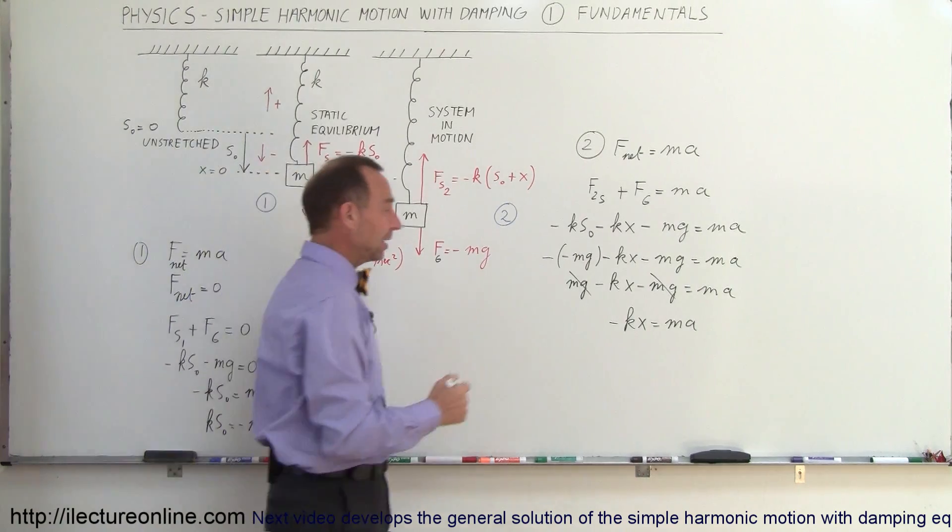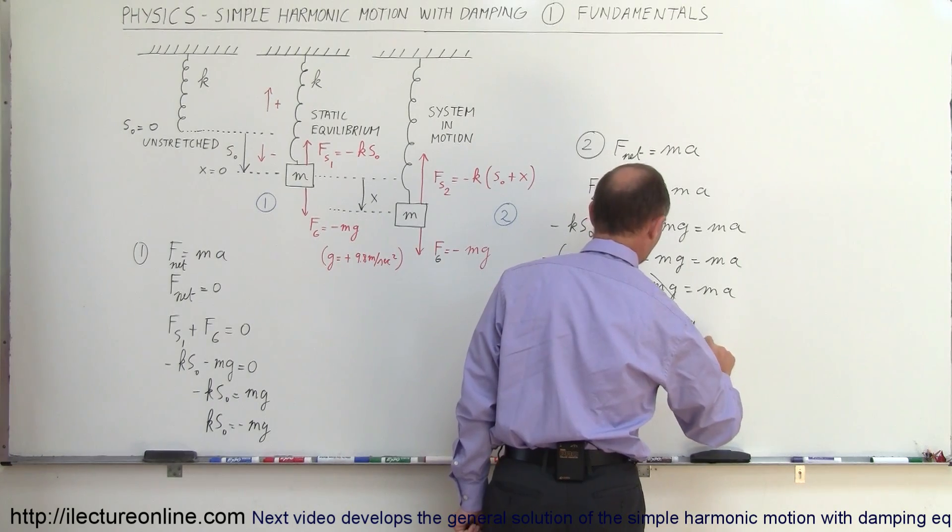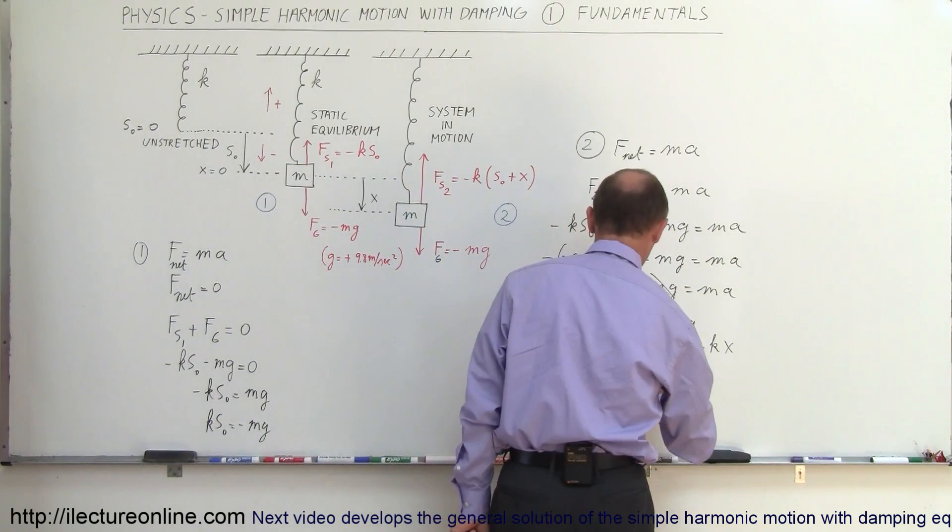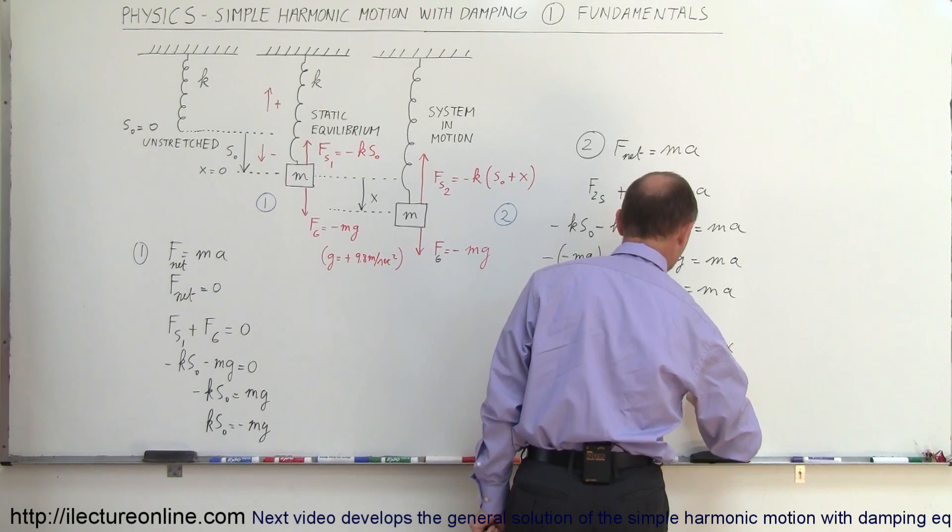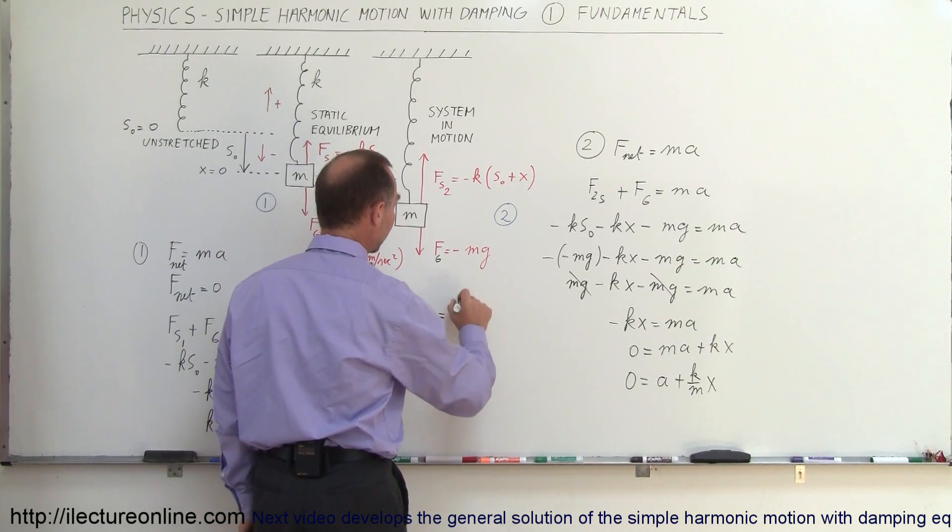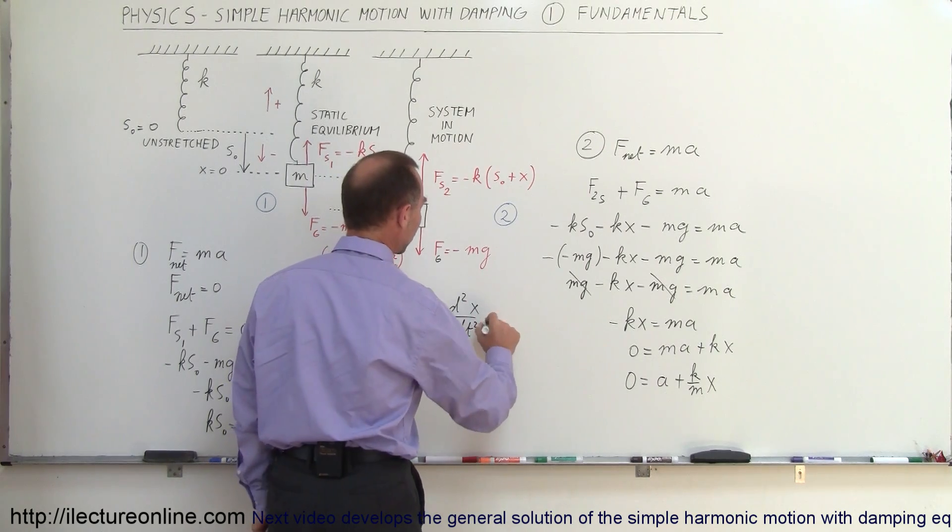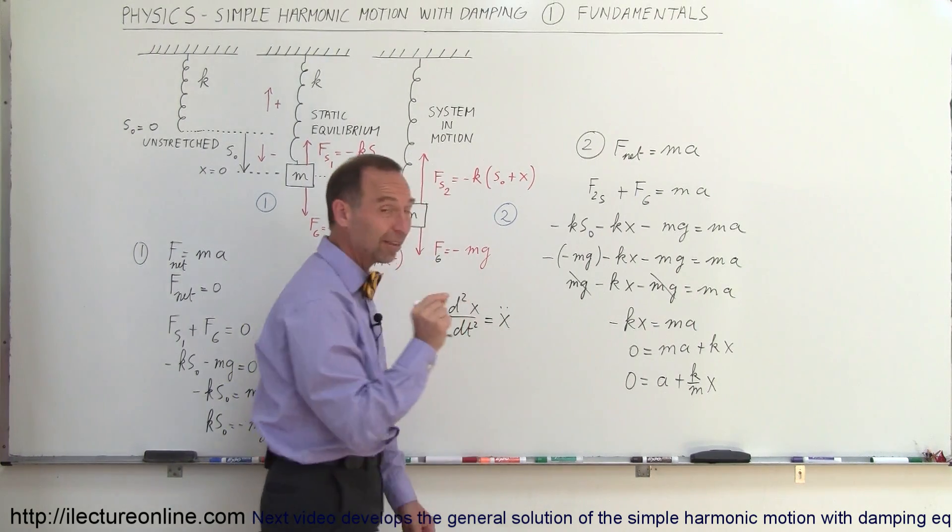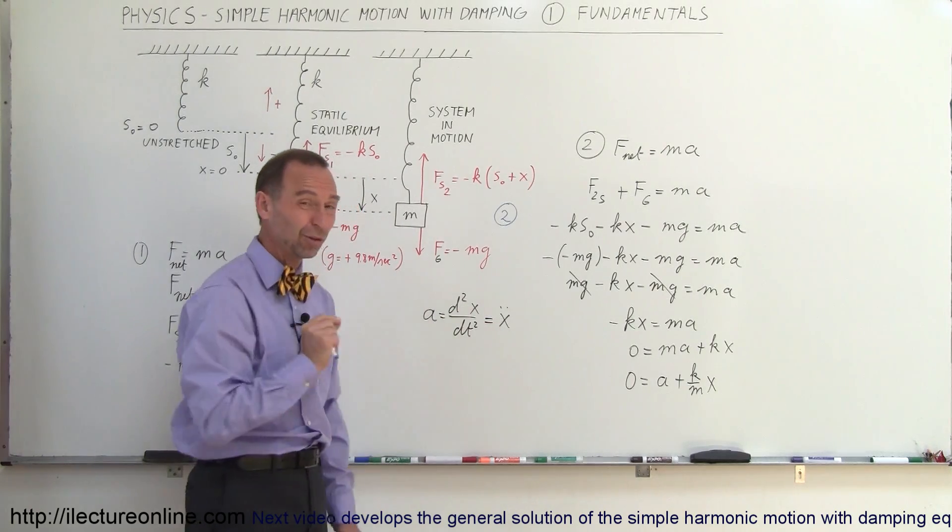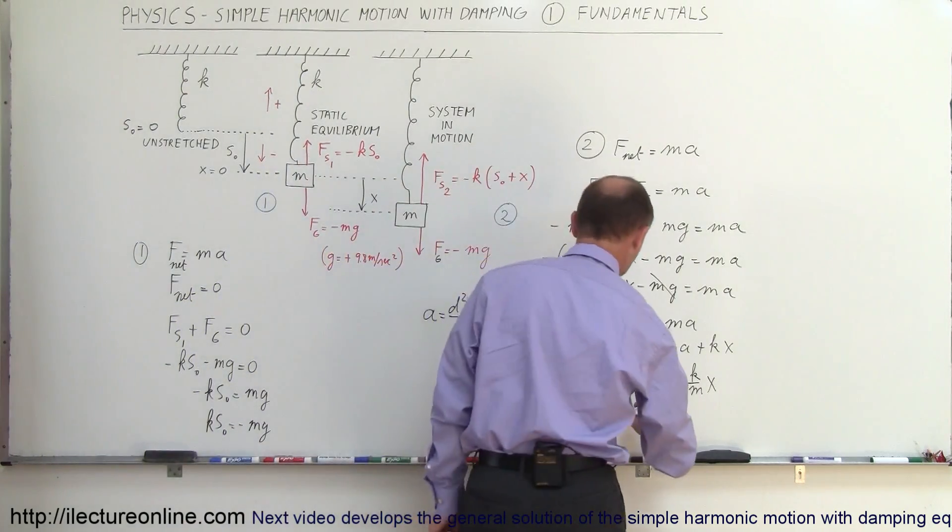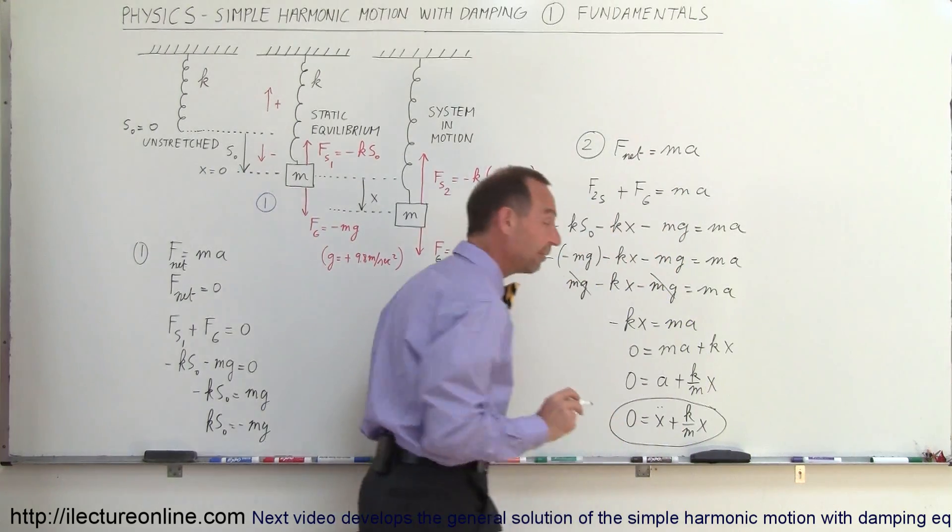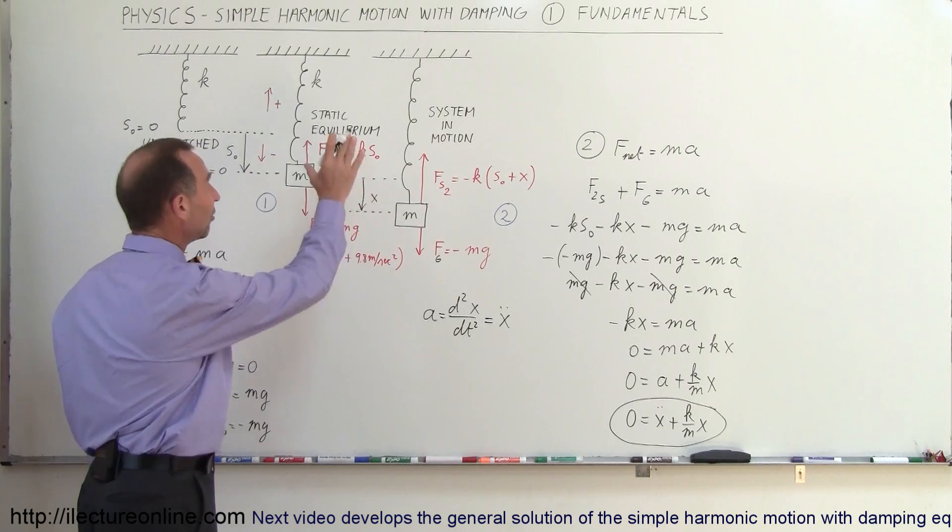I can write all that on one side. I can simplify this as saying zero is equal to ma plus kx. Then I could divide both sides by m, and there's a reason why I do that. Zero is equal to a plus k over m x. Then I could take advantage of the concept that acceleration is equal to the second derivative with respect to time of position, which can also be written as x double dot. So x with two dots on top simply means the second derivative of that variable with respect to time. If I employ that, I can say that zero is equal to x double dot plus k over m x, which now becomes what we call the differential equation that describes simple harmonic motion.